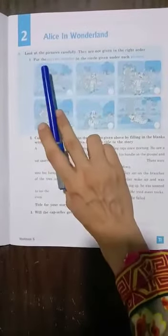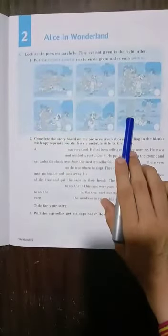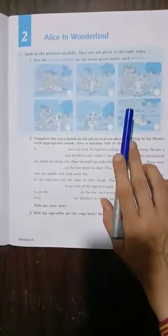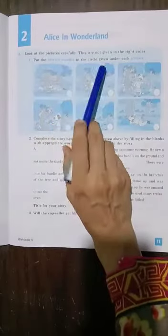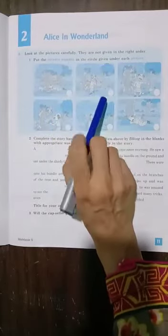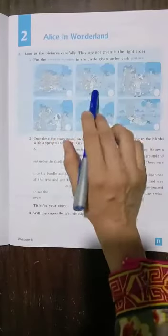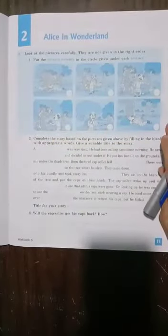What do you want to do? Look at the pictures carefully. You have to look at these pictures. They are not given in the right order. This is not in the correct order. What do you want to do? You have to create your story. You have to put the correct number in the circles given under each picture. These are the circles that you have. You have to number according to the story.